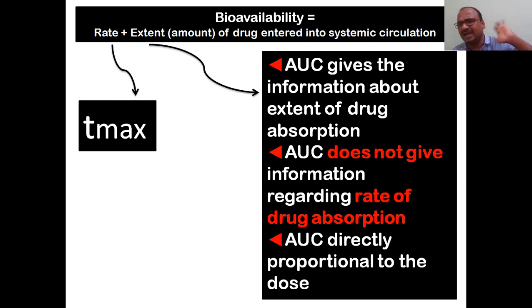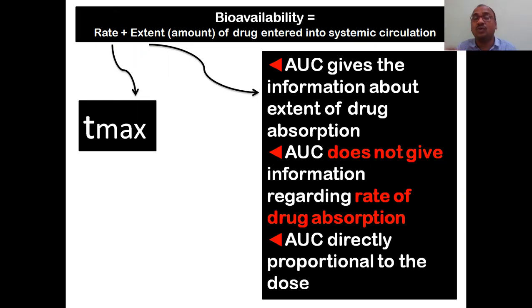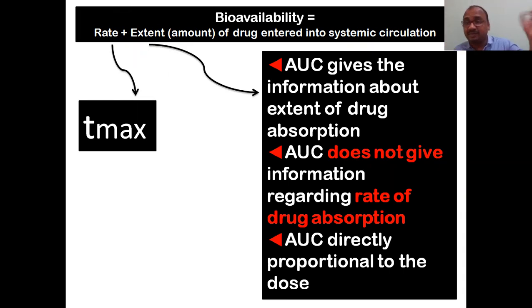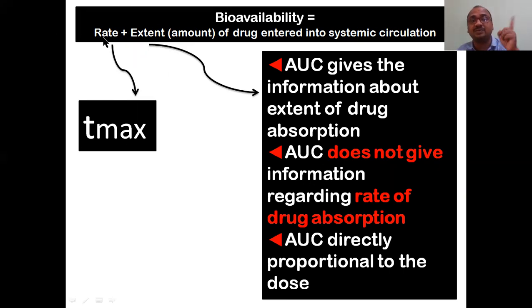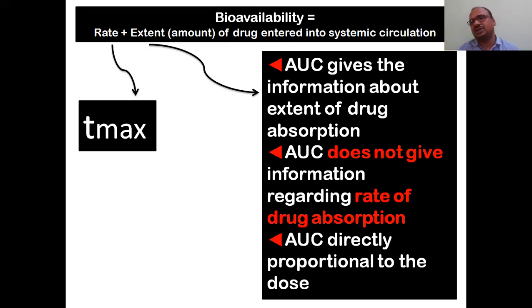C-max and T-max give information regarding the rate of drug absorption. AUC - area under the curve - gives information about the extent of drug absorption. AUC does not give information regarding the rate of drug absorption; it only gives information regarding the extent of absorption. AUC is directly proportional to the dose: higher the dose, higher the extent of drug absorption.